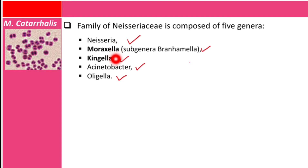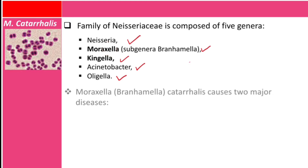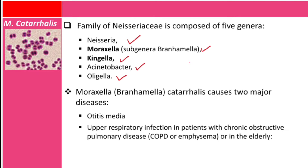We are going to talk mainly about two genera: Moraxella and Kingella. We're covering mainly Moraxella catarrhalis because it's very important. Moraxella catarrhalis causes two major diseases: otitis media, and upper respiratory infection in patients with chronic obstructive pulmonary disease (COPD), emphysema, or in the elderly. This bacteria is part of the normal respiratory flora.